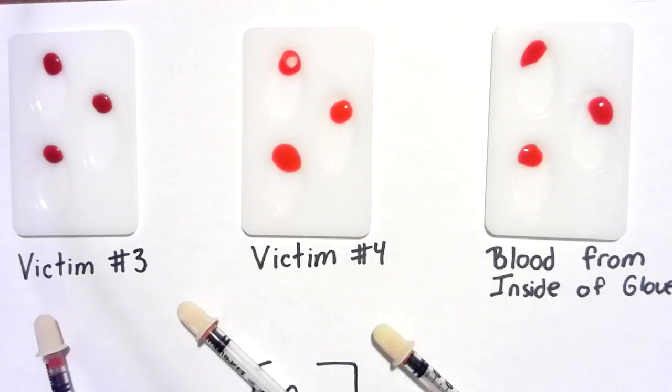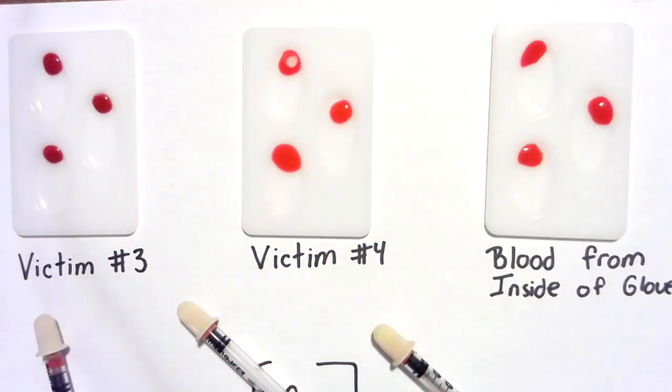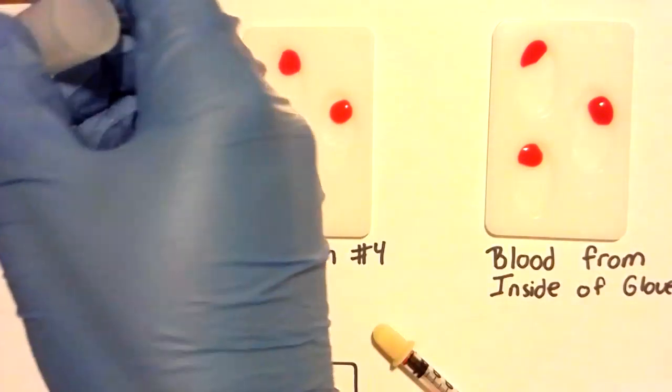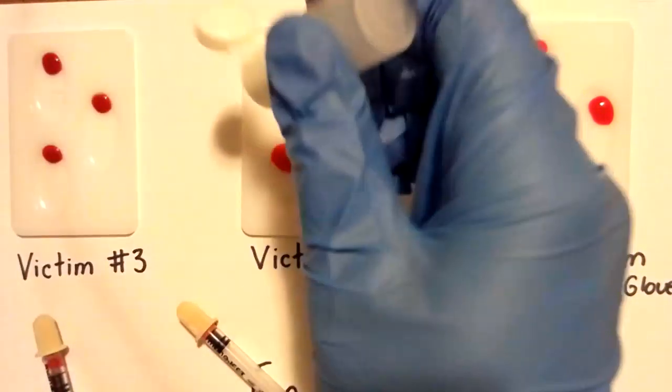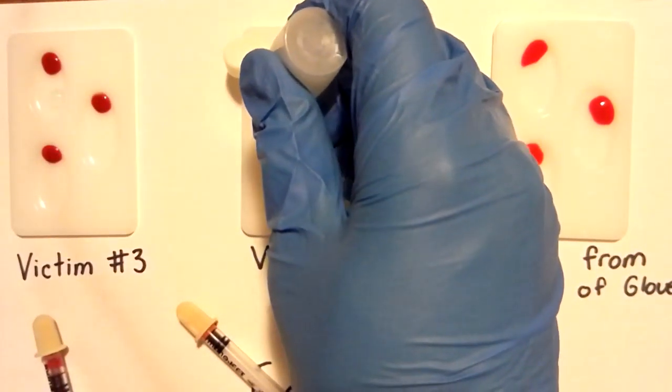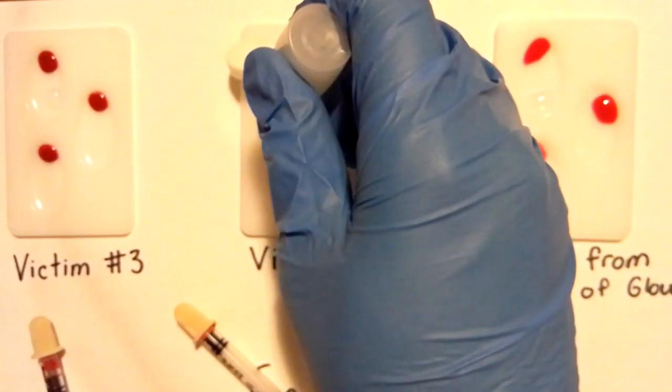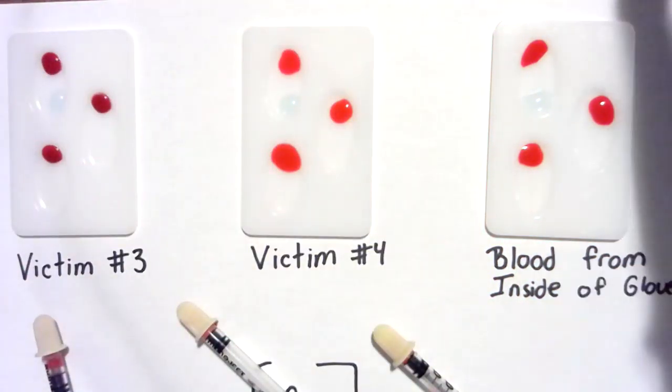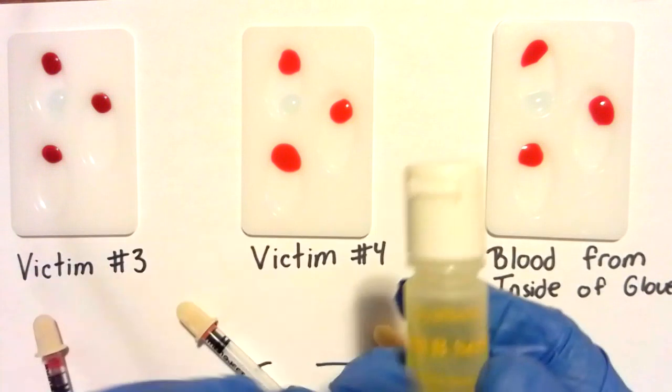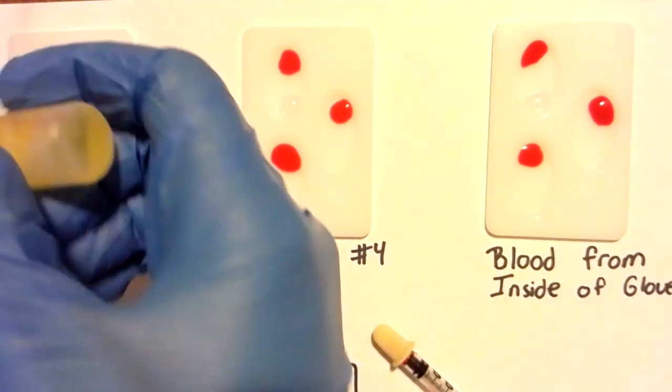We are now going to go ahead and mix them with the appropriate reagents. So we've got our anti-A serum, which we will put in the top left hand spot. We will put our next reagent, which is our anti-B serum, in the slot right below that.